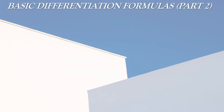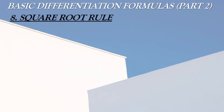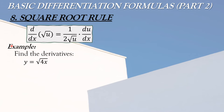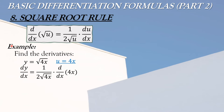Proceed tayo sa 8th rule, and that is the square root rule. Kaya siya tinawag na square root rule ito ay dahil gagamitan natin siya ng square root symbol. Ito yung formula na gagamitin natin in finding the derivative when using the square root rule. For example: find the derivative of y equals square root of 4x. Ang u is yung 4x. So let us now solve: dy/dx equals 1 over 2 square root of 4x times the derivative of u or derivative ng 4x with respect to x.